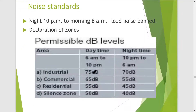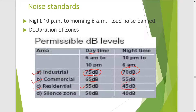Regarding noise standards, these are different in different areas. In industrial areas, the permissible limit is 75 decibel during daytime and 70 decibel at night. In commercial areas it is 65 decibel during the day and 55 decibel at night. In residential areas, 55 decibel in the day and 45 decibel at night. In silence zones it is 50 decibel during day and 40 decibel at night.